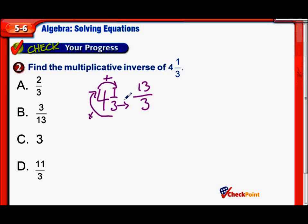So 4 and 1/3 is equal to 13/3. But that's not the multiplicative inverse. Now we do the little flip it over thing. So that would be 3 over 13. Does that match one of our answers? Yep, there it is.